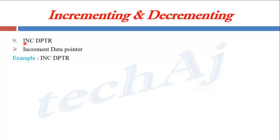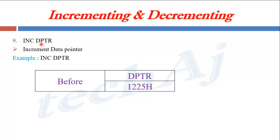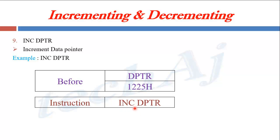The INC instruction can also be used with the DPTR register to increment its value. Since DPTR is a 16-bit register, if initially DPTR holds the value 1225H and we execute INC DPTR, the value of DPTR will be incremented by 1.